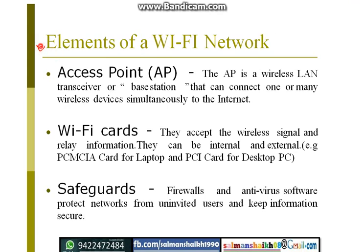The elements of a Wi-Fi network — how the Wi-Fi network is formed. There is one access point, there are Wi-Fi cards, and a few safeguards are to be maintained in order to keep the Wi-Fi network working. An access point is nothing but a wireless LAN transceiver or base station that can connect one or many wireless devices simultaneously to the internet.